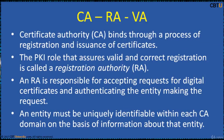The main components of PKI are CA, RA, and VA. The Certificate Authority (CA) binds through the process of registration and issuance of certificates. Depending on the assurance level of the binding, this may be carried out by an automated process or under human supervision. The PKI role that assures valid and correct registration is called a Registration Authority (RA). RA is responsible for accepting requests for digital certificates and authenticating the entity making the request. In Microsoft PKI, a Registration Authority is usually called a subordinate CA. A third party Validation Authority (VA) can provide entity information on behalf of the CA.